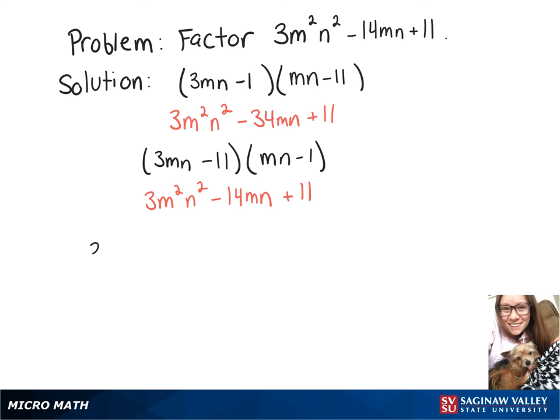Since that's the trinomial we started with, we can rewrite 3m²n² - 14mn + 11 as (3mn - 11)(mn - 1).